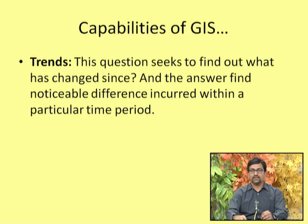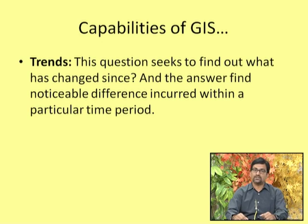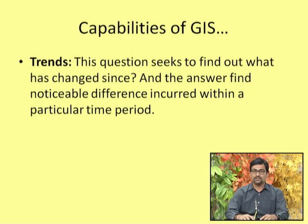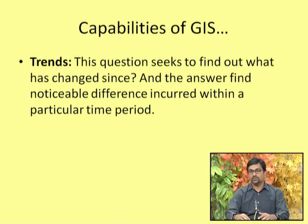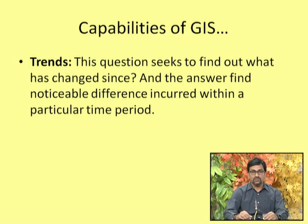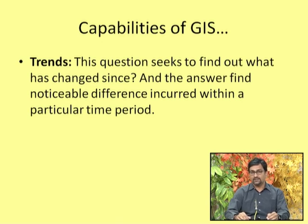Trends is the third strength of GIS. This seeks to find out what has changed since, like the development of Gandhinagar over the last 30 to 40 years since its inception as capital of Gujarat. If we have different data sets over the years and decades, trends can be easily established and tracked. We could have maps for every decade — during the 70s, 80s, 90s, and into the 21st century — to see what changes have taken place.